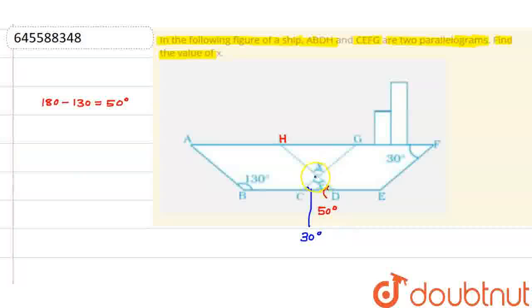Now if you talk about this point, let's say this point is Z. So I can say in triangle CZD the sum of all angles is 180. That means X plus 50 plus 30 is equal to 180 degrees. That means X is equal to 180 minus 80, which means 100 degrees. So the value of X is equal to 100 degrees. Thank you.